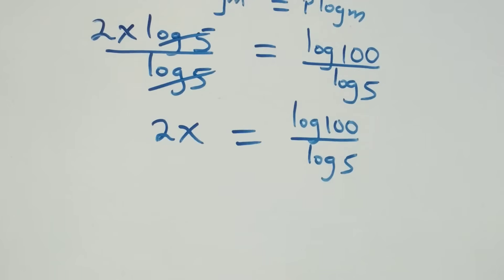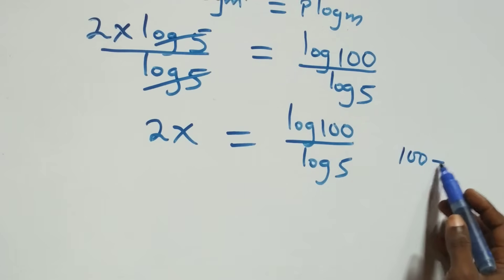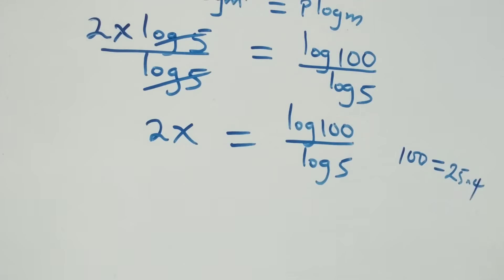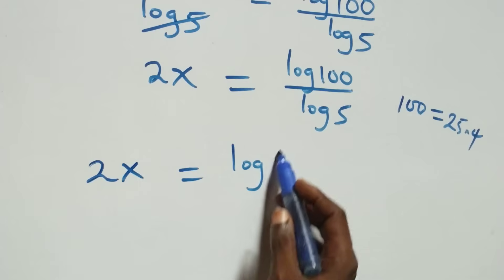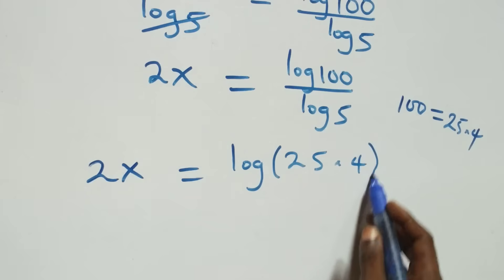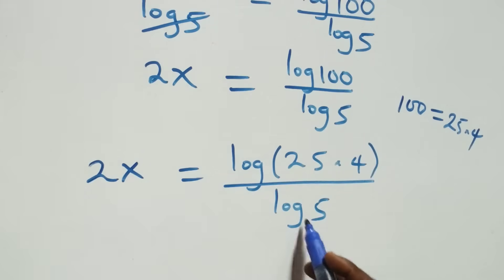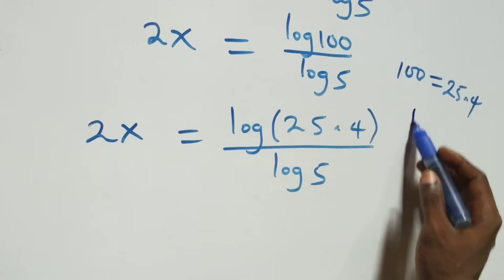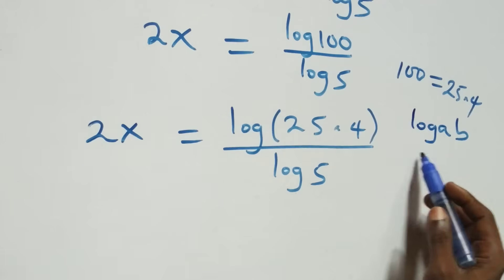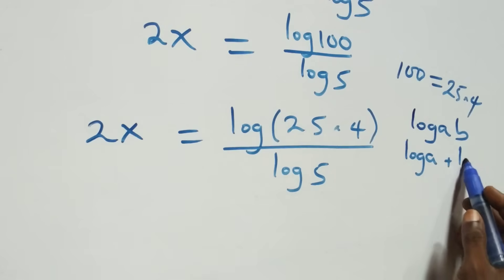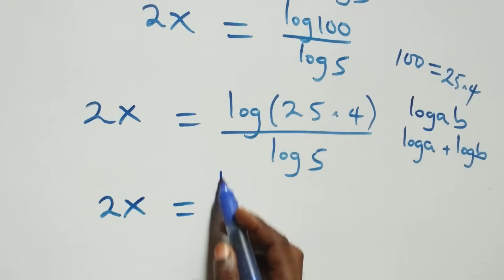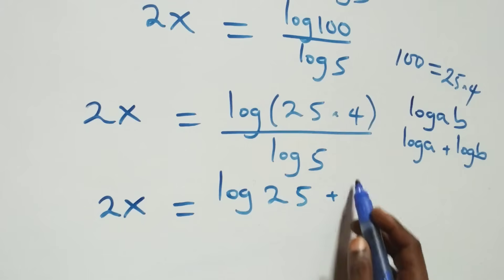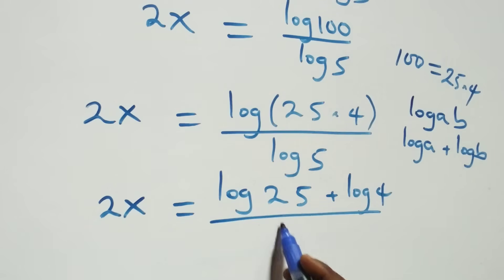The next step: we can express 100 as 25 times 4. So what we have now becomes 2x equals log(25 times 4) over log 5. This follows the law of logarithms: log(a times b) is the same thing as log a plus log b. So this becomes 2x equals log 25 plus log 4, over log 5.